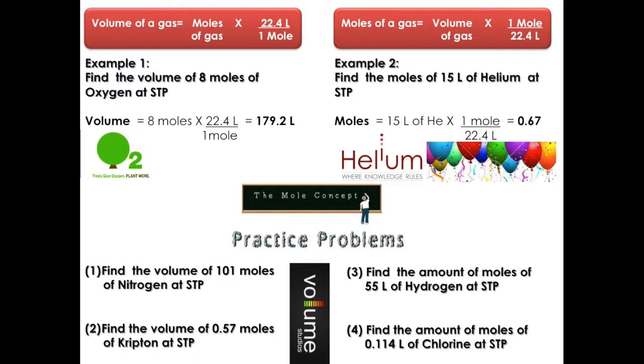Example number 2. Find the moles of 15 liters of helium at STP. Back again, we have 15 liters of helium. And we are going to multiply it as a fraction where the liters will go at the bottom and the moles on top. Back again, our liters are 22.4. Dividing it, that will give us 0.67 moles.